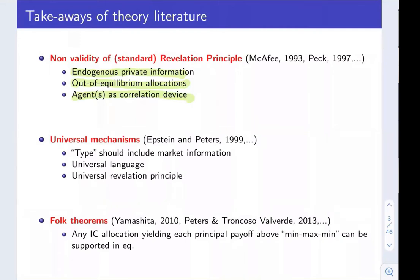A second block of the literature has established the existence of a universal language that is rich enough to describe mechanisms in full flexibility. In an influential paper by Epstein and Peters in the 90s, it was shown that the type of an agent communicating with a principal in a multi-designer setting should also include market information. But as noticed by Mekafi and Peck, that's a challenge — because when a principal asks an agent to describe a mechanism offered by another designer, the principal should anticipate that the other designer's mechanism may also require some description of the principal's own mechanism, leading to an infinite regress.